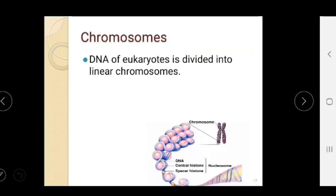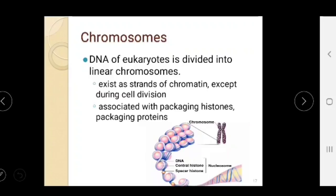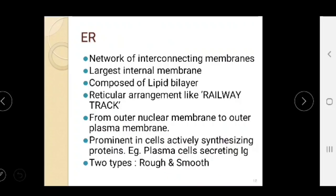The DNA of eukaryotes is divided into linear chromosomes, which exist as strand-like structures called chromatin except during cell division. They are associated with packaging proteins called histones. A histone with two turns of DNA wrapped around it is called a nucleosome.